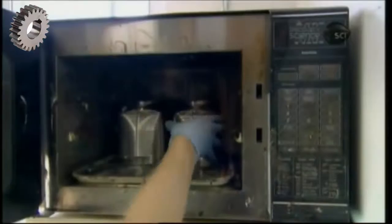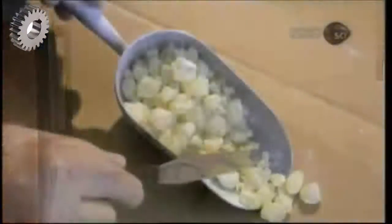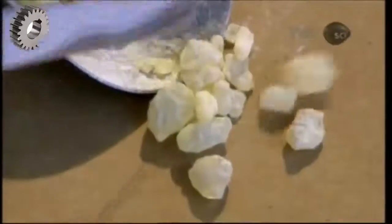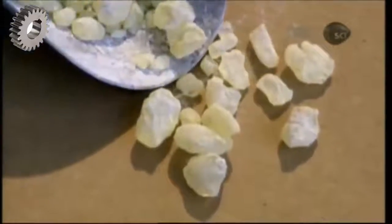They melt them in a microwave oven on convection mode. Next, they add dammer resin, which comes from trees native to Southeast Asia.